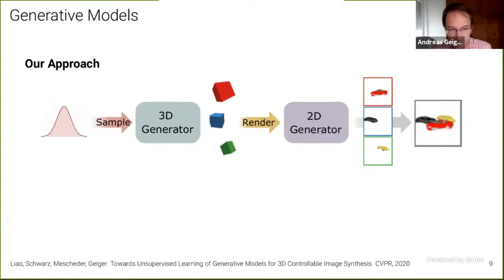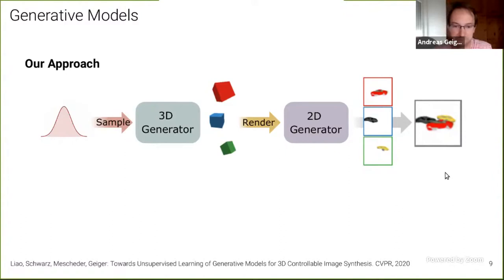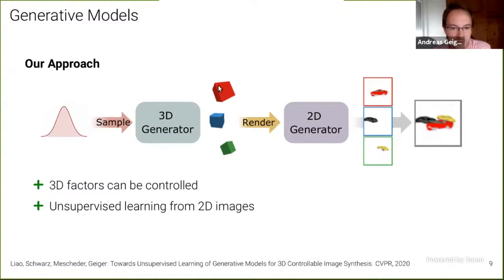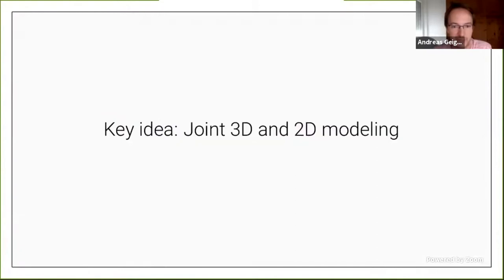The reason 3D factors aren't fully disentangled in standard GANs is that a relatively naive 2D convolutional network is used for the image generation process, and this architecture needs to learn all aspects of the image formation process — for instance, perspective projection — which is something we actually know something about. So we should incorporate this into the image generation pipeline. This gives rise to our approach, where we have a random sample fed into a 3D generator that generates a set of 3D primitives, rendered onto the image plane as feature maps, and then a 2D generator — both trainable — that can be learned in an unsupervised fashion from 2D images, just like GANs.